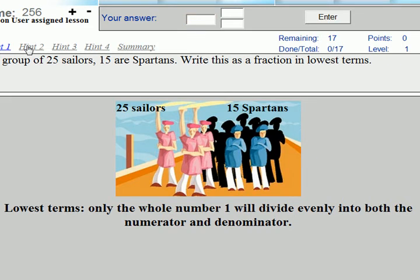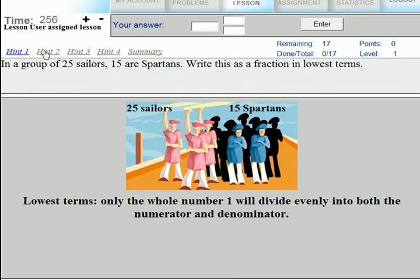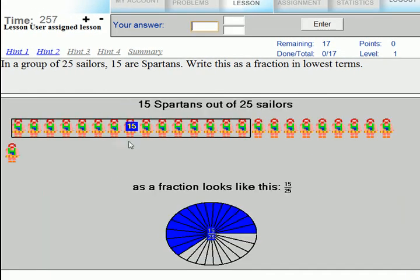If we don't know what that means, we look at hint 2, which shows us that if we counted all the sailors, we would have 25 with 15 out of 25 in the box. On the bottom, we can see the picture of how 15 out of 25 is expressed as a fraction.